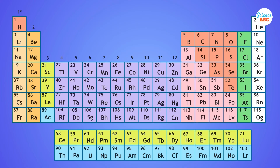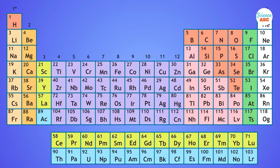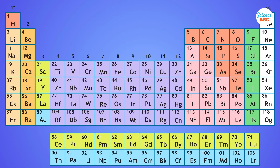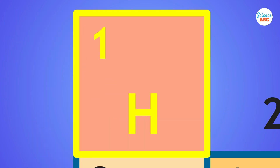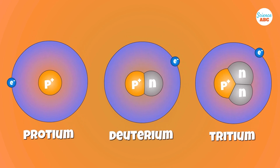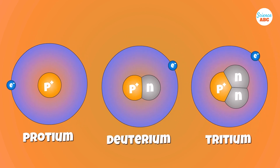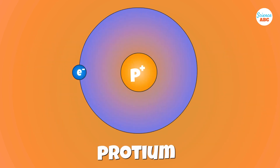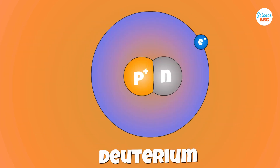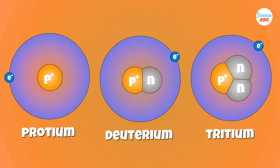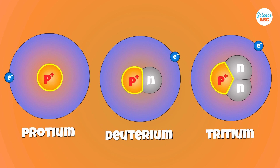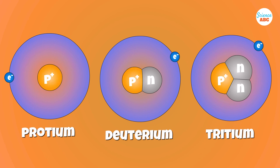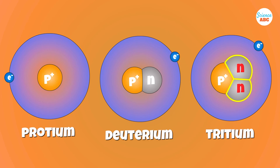Every element in the periodic table has isotopes. For example, hydrogen, the first element, has three naturally occurring isotopes: protium, deuterium, and tritium. All three isotopes have just one proton but different numbers of neutrons — zero, one, and two, respectively.